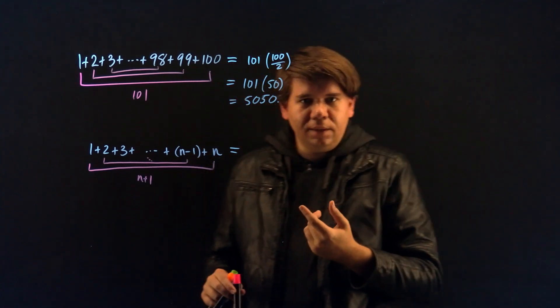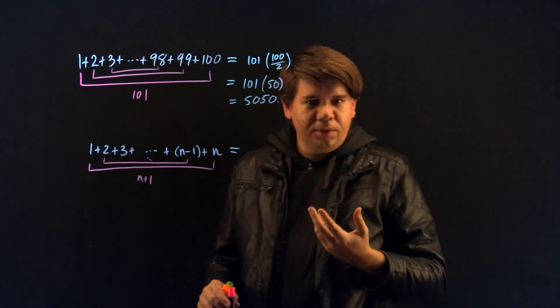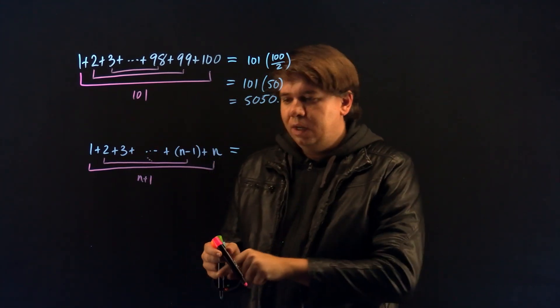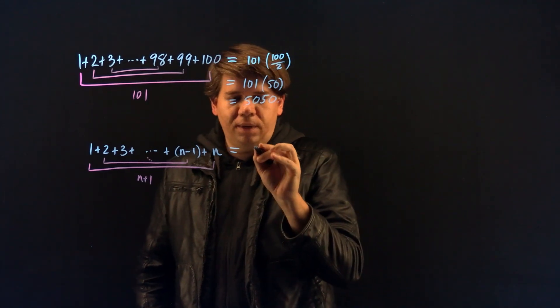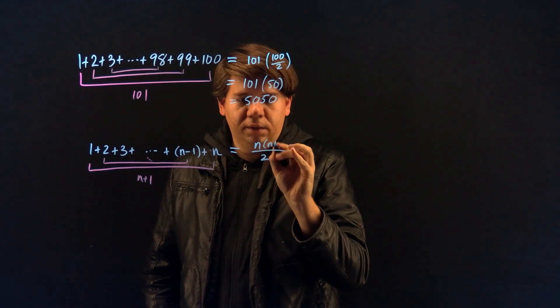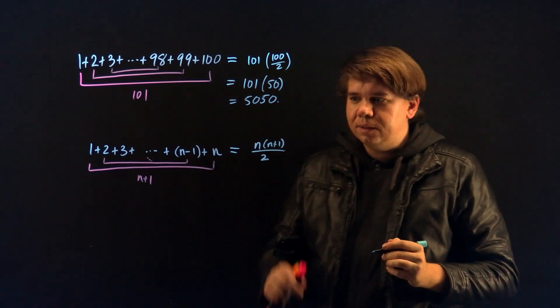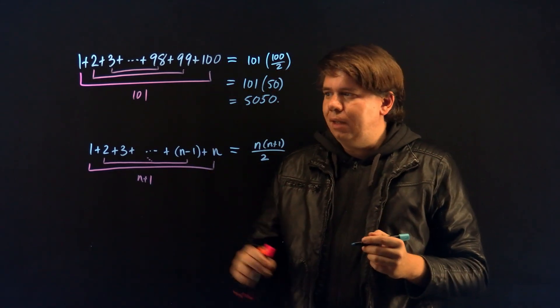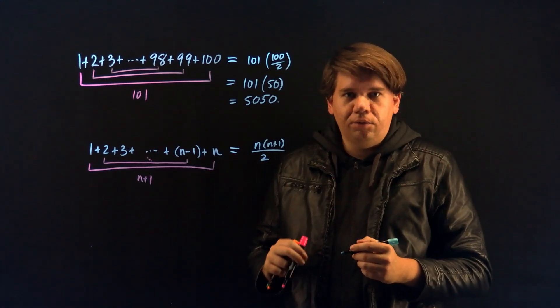So you get several pairs. How many pairs do you get? Well, half as many as the number of numbers, so n divided by 2. So the total comes out to be n divided by 2 times n plus 1. There we have it. A formula for the sum of the numbers 1 through n.